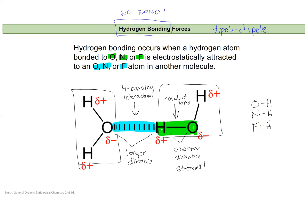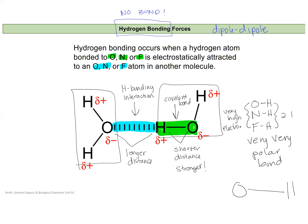Hydrogen bonding is only found when there is an O–H, N–H, or F–H bond in the molecules you're looking at. The reason is that oxygen, nitrogen, and fluorine all have very high electronegativities, while hydrogen is at 2.1. This creates a very, very polar bond, so the partial positive charge on the hydrogen and the partial negative charge on the oxygen is very large compared to other molecules. That's why we get this very strong interaction between that hydrogen and the lone pair in an orbital on another molecule.